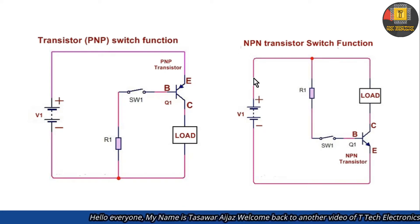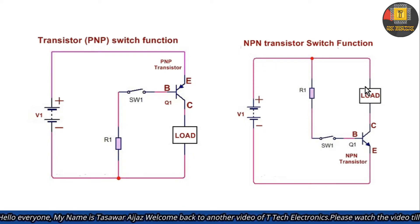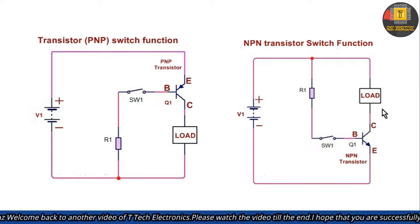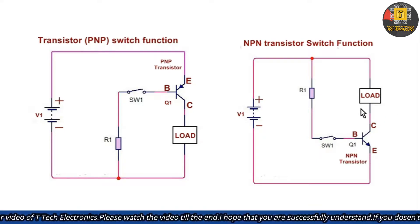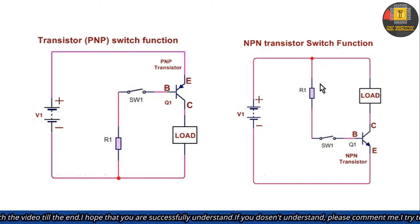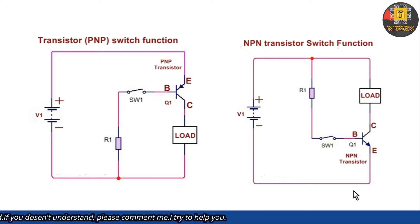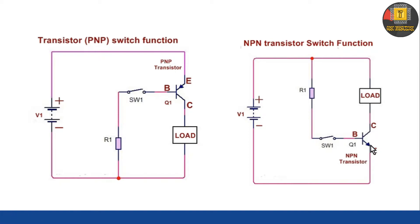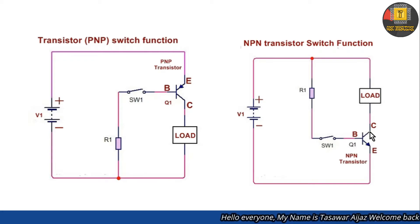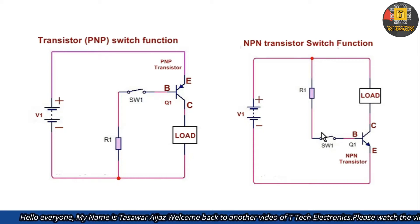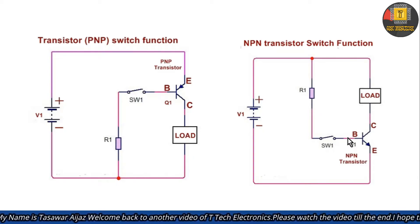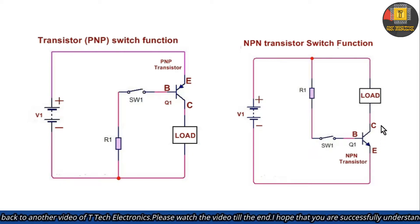In the NPN transistor circuit, we had positive connected to the load, and I had attached the multimeter set to voltage. We applied positive through a resistor to the base. Negative was connected to the emitter, and output was taken from the collector. When using the transistor as a switch, emitter and collector are shorted when base current is applied. I had used a 1K resistor.